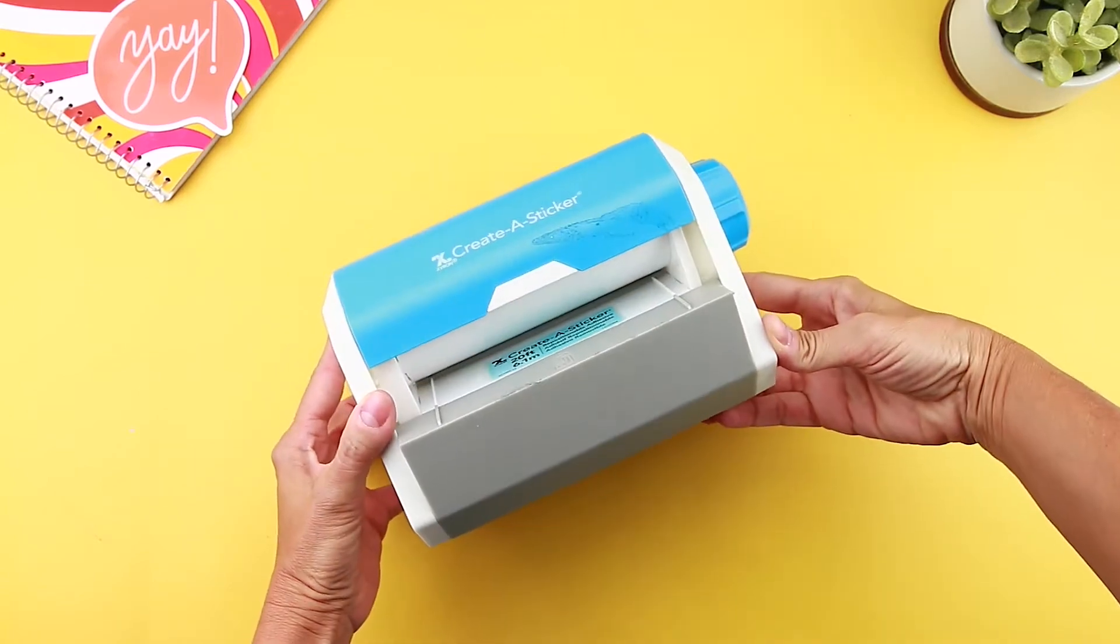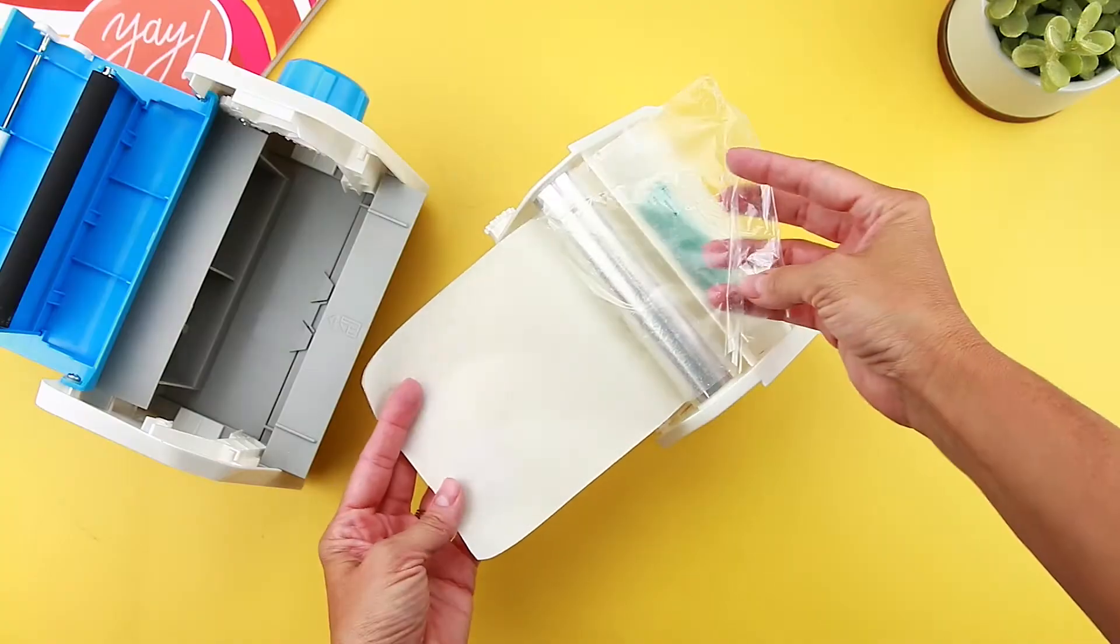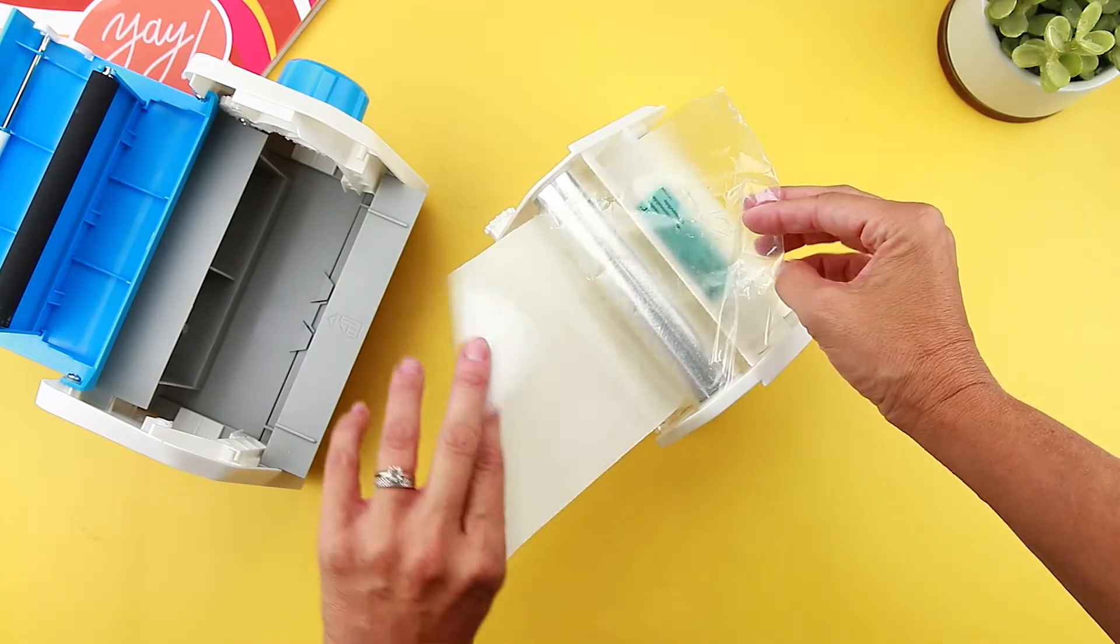Hi there, I'm here with a quick tip on how to fix your 5-inch Create-A-Sticker sticker maker. If you ever find your sticker paper come separated from the clear film.